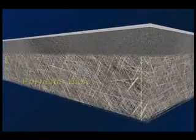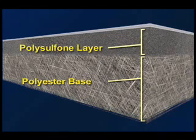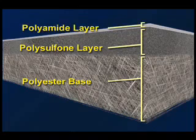We begin the process with a fabric support base and then coat it with a microporous polysulfone layer. This provides additional support for the top 0.2 micron thick membrane barrier layer.